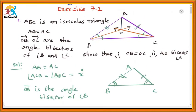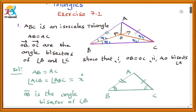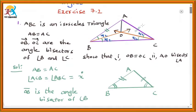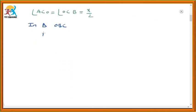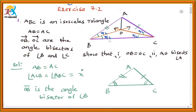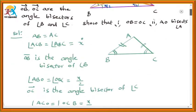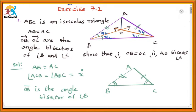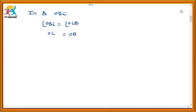Now, we got that angle OBC is x by 2 and angle OCB is also x by 2. Let us take the triangle OBC. In triangle OBC, we have got that angle OBC is equal to angle OCB. In a triangle, if two angles are equal, then their opposite sides are equal. So the side opposite to angle OCB is OB, and the side opposite to angle OBC is OC. So OB equals OC. This we have proved.